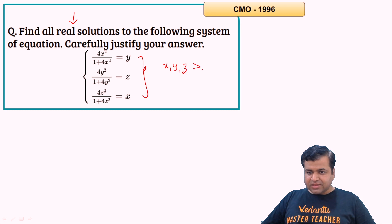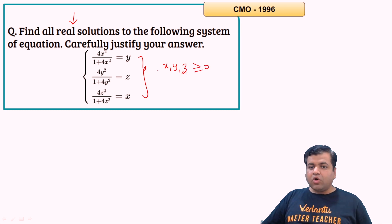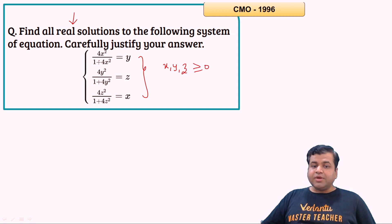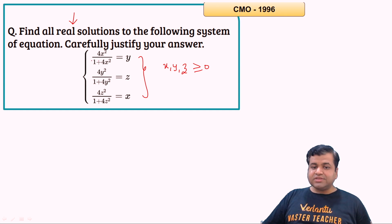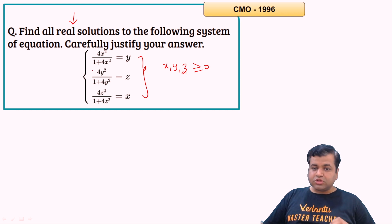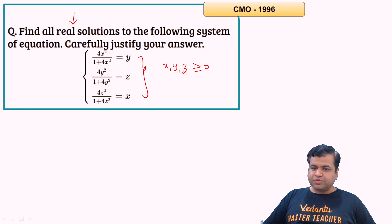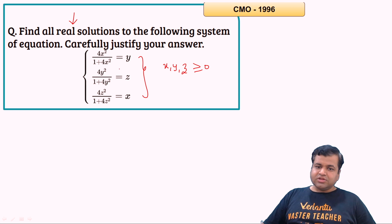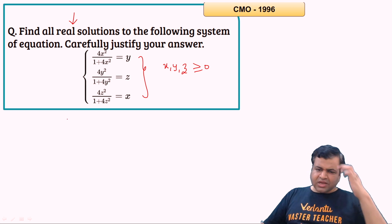The equations are: 4x²/(1 + 4x²) = y, 4y²/(1 + 4y²) = z, and 4z²/(1 + 4z²) = x. From these three equations we can say x, y, z are all greater than or equal to 0 — they must be non-negative because each left-hand side consists of a perfect square, which is always ≥ 0.